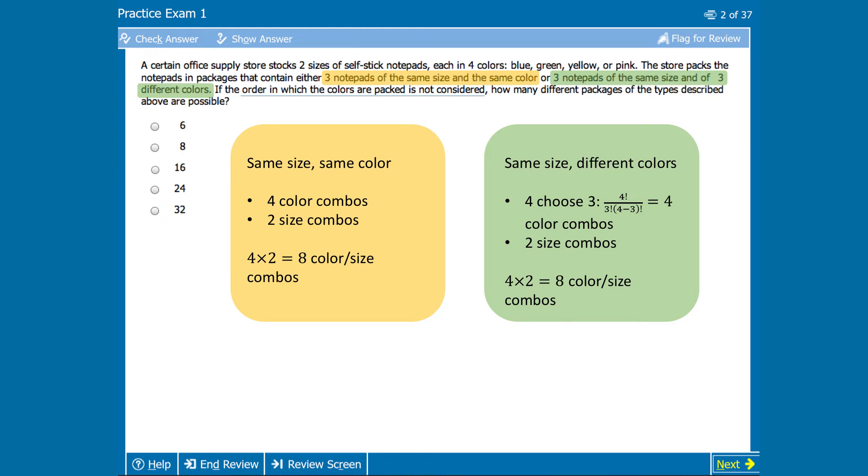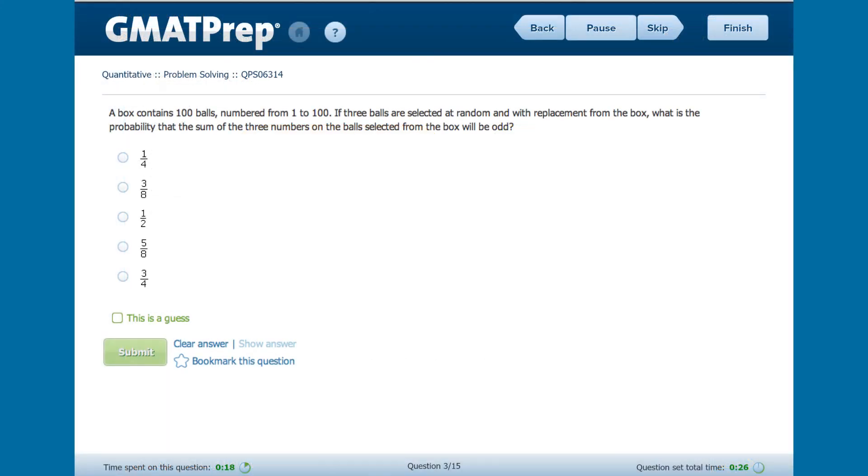All right, now that we've handled both types of package separately, let's bring them together. If there are eight packages of the first type and eight packages of the second type, then there are eight plus eight equals 16 packages in total. And our answer is C. So this is a pretty nasty problem when we look at it all together, but each of its components are relatively simple and not that hard to put together.